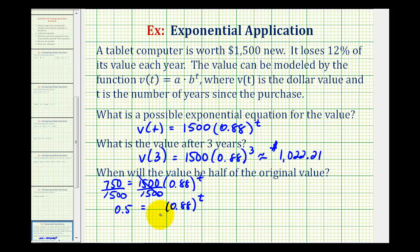And now we can use logarithms to solve this for t. If we take the natural log of both sides of the equation, on the right side we can use the power property of logarithms to move this t to the front, giving us ln(0.5) = t · ln(0.88). And now to solve this equation for t, we can divide both sides by ln(0.88).